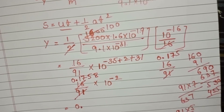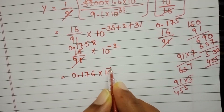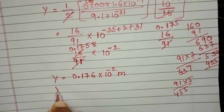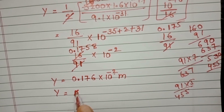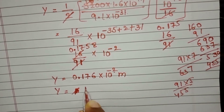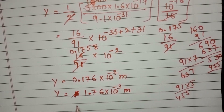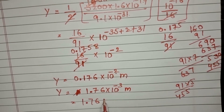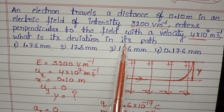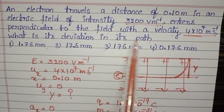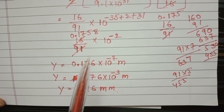The result is approximately 0.176 into 10 to the power minus 2 meters, which equals 1.76 into 10 to the power minus 3 meters. Converting to millimeters, that is 1.76 millimeters. So the deviation of the electron in its path is 1.76 millimeters, and the first option is correct.